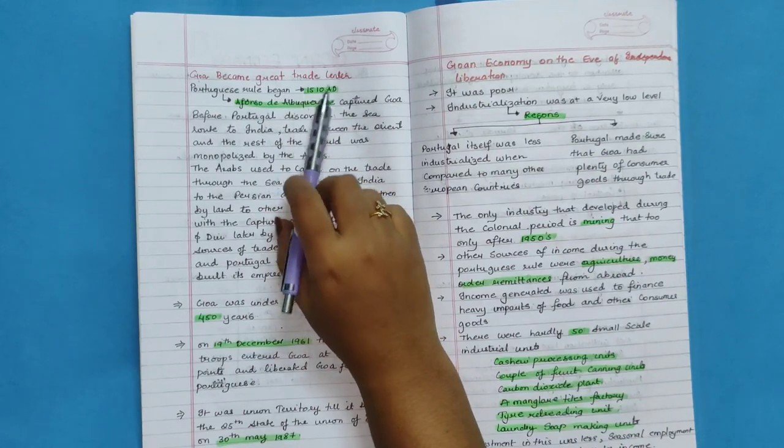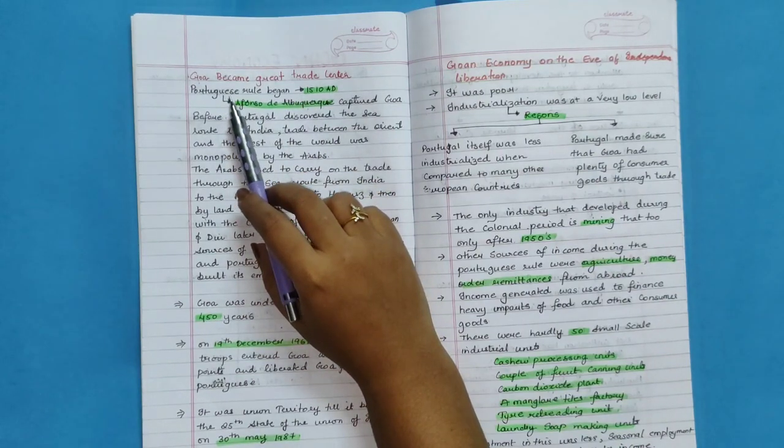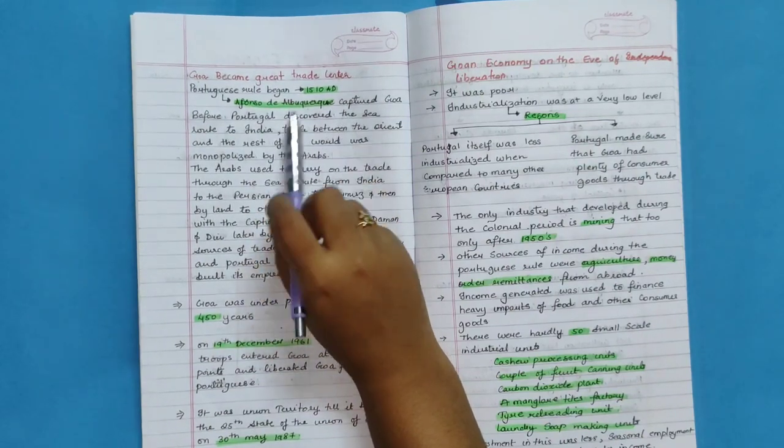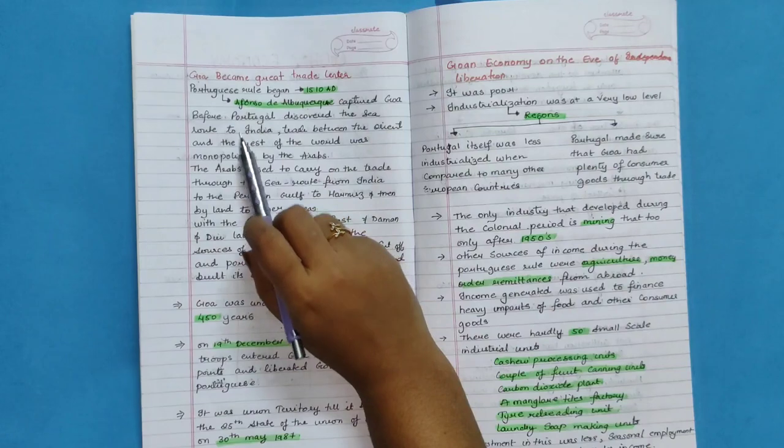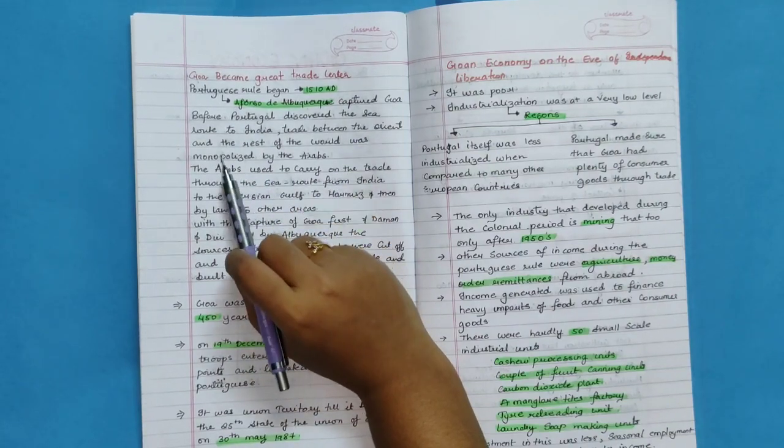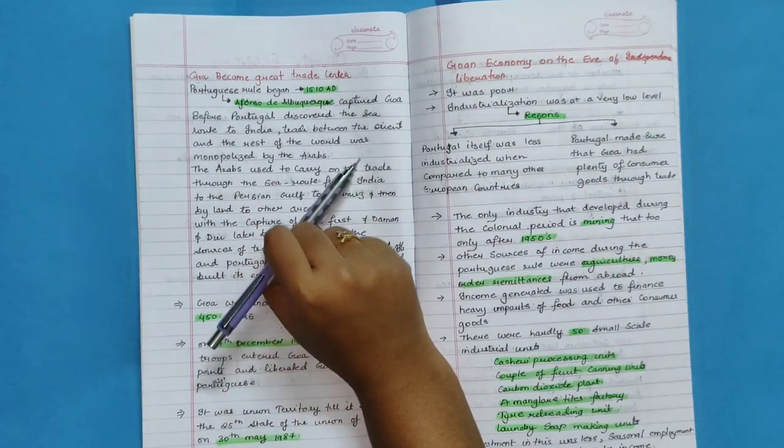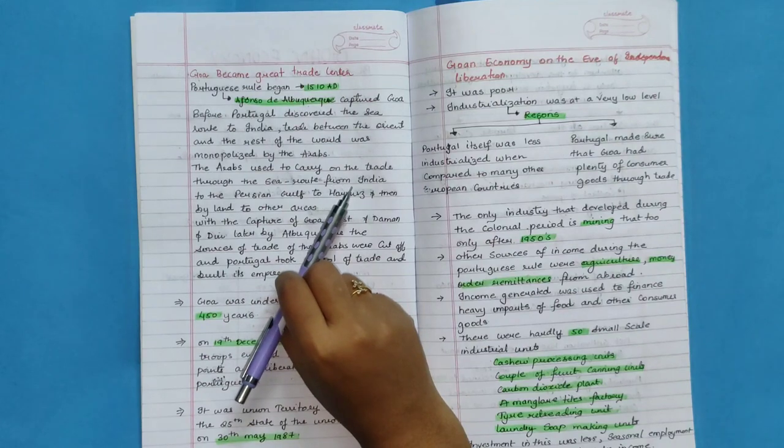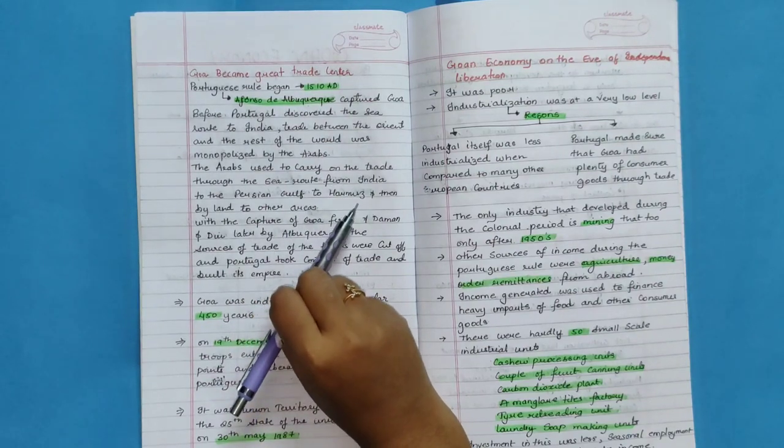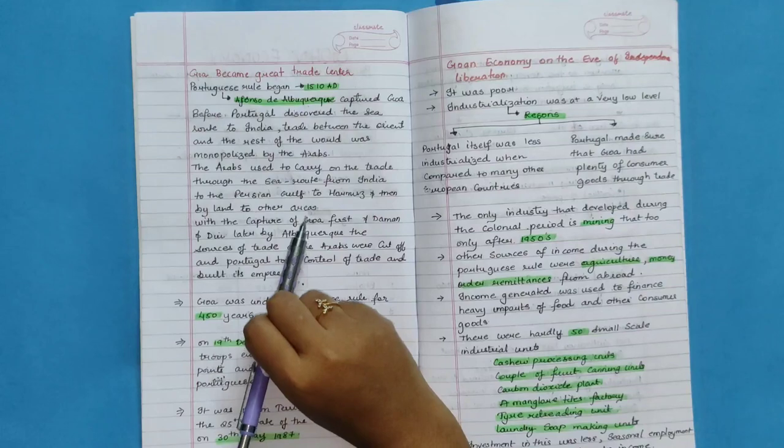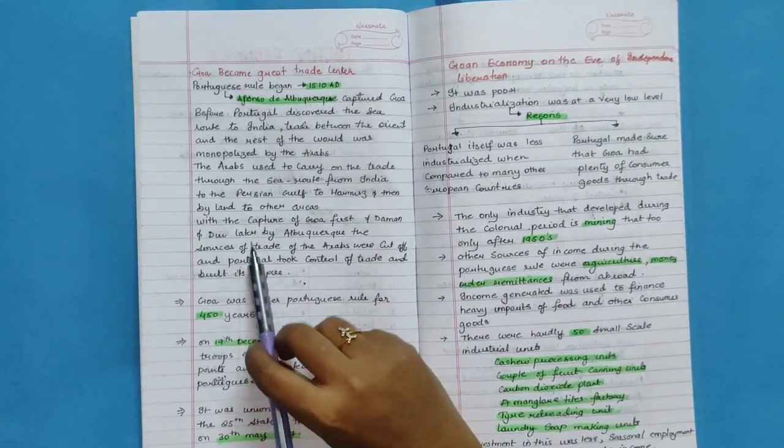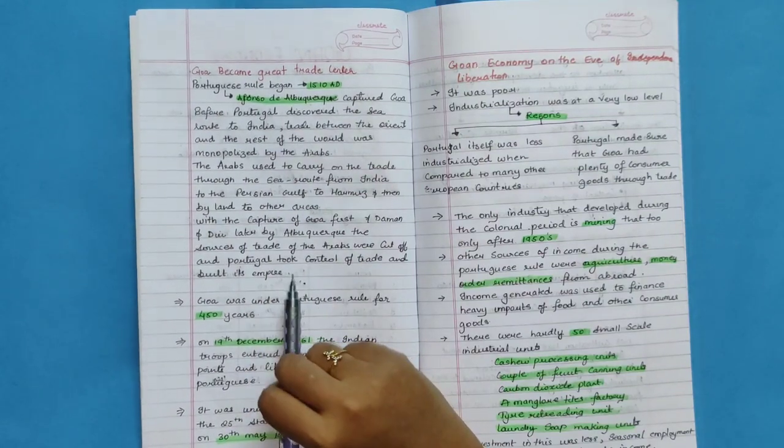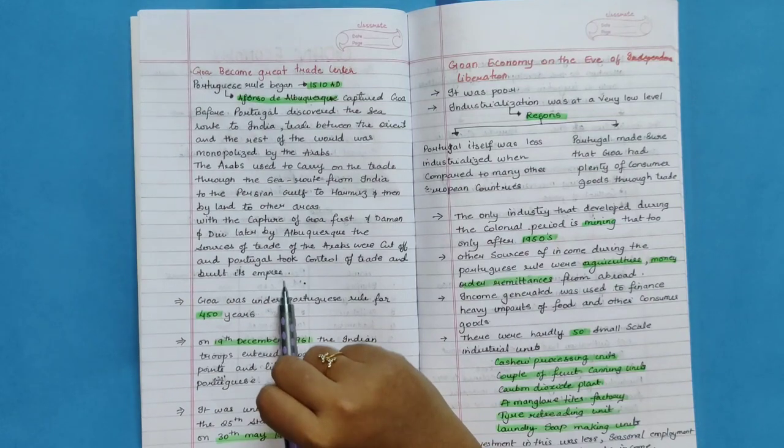Goa became a great trade center. Portuguese rule began in 1510 AD. Afonso de Albuquerque captured Goa. Before Portugal discovered the sea route to India, trade between the Orient and the rest of the world was monopolized by Arabs. The Arabs used to carry on trade through the sea route from India to the Persian Gulf and then by land to other areas.